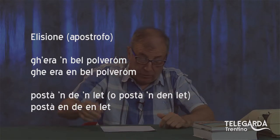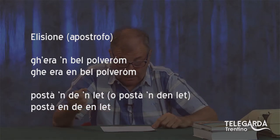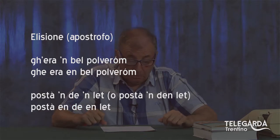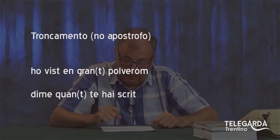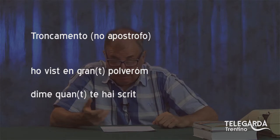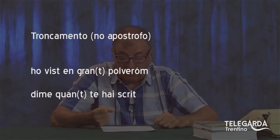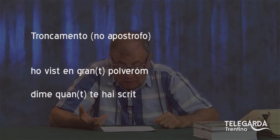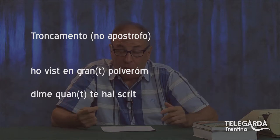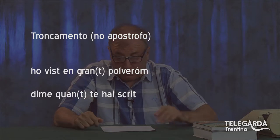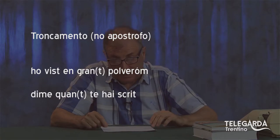L'elisione è quando cade una o più lettere e al suo posto va l'apostrofo. Poi c'è il troncamento: cos'è il troncamento? Anche qui cadono una o più lettere, però non ci va l'apostrofo. Ho visto en grand polveróm: grand sta per grande, ma c'è lo scontro fra la T e la P — una questione fonetica — quindi la T cade senza apostrofo: il classico troncamento.